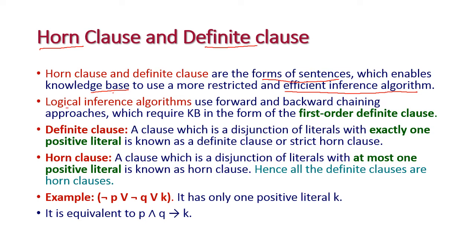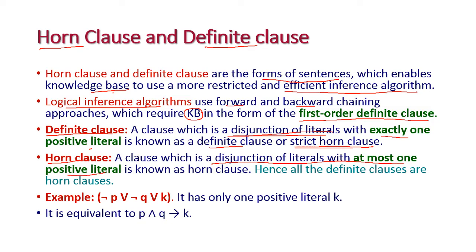The logical inference algorithm uses forward and backward chaining, and it requires the knowledge base information to be in the form of first-order definite clauses. A definite clause is a disjunction of literals with exactly one positive literal, and it is otherwise called a strict horn clause. A horn clause is a disjunction of literals with at most one positive literal. Hence, all definite clauses are horn clauses.